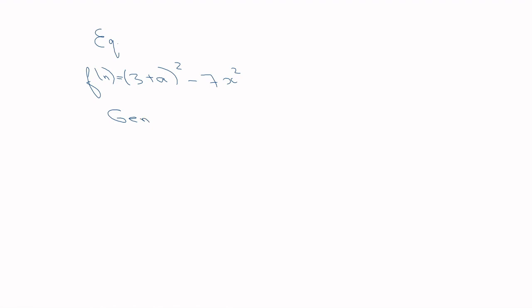Genetic programming is a variation on genetic algorithms where we're essentially writing programs. It's used in generalized scenarios — for example, evolving something that can solve any generic sudoku puzzle, evolving an equation to fit data, or evolving logic for a robot navigating a maze.